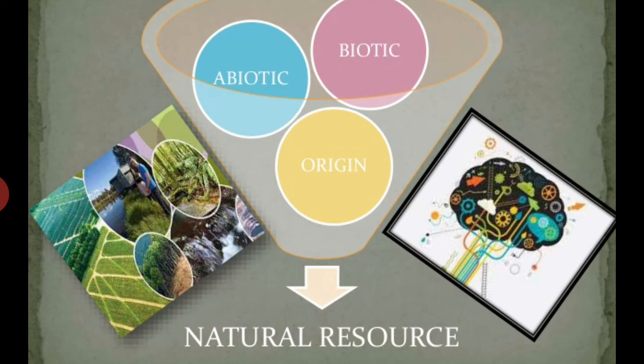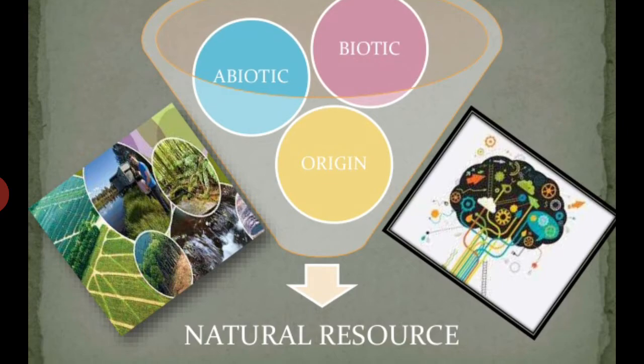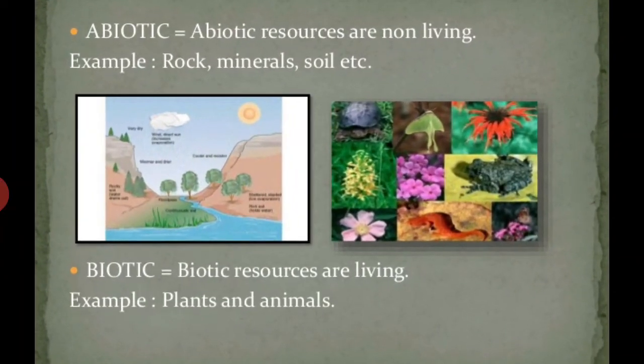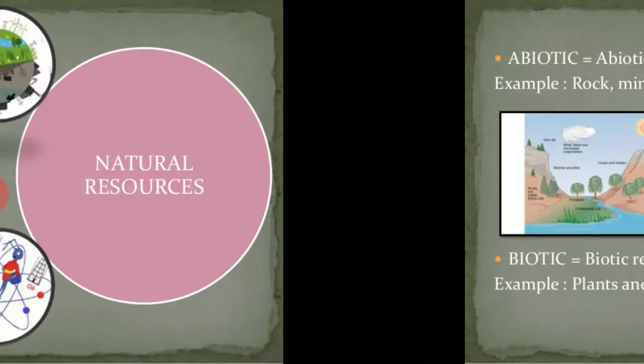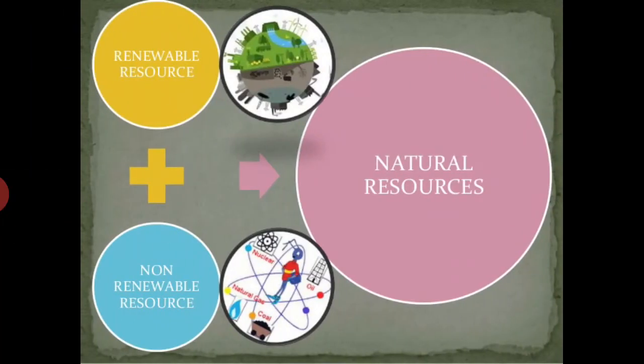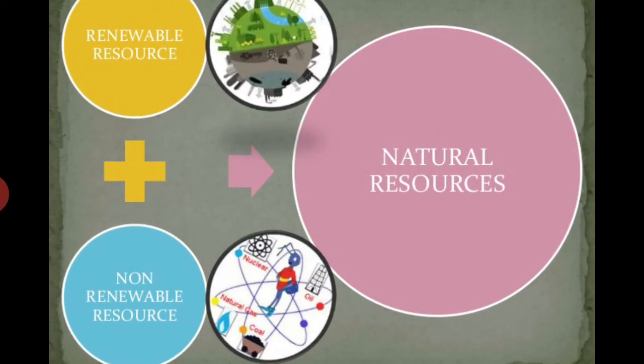On the basis of origin, resources are classified as biotic and abiotic. All living beings and living things are called biotic resources, and non-living things are called abiotic — like rock, mineral, and soil are abiotic resources, while plants and animals are biotic resources.